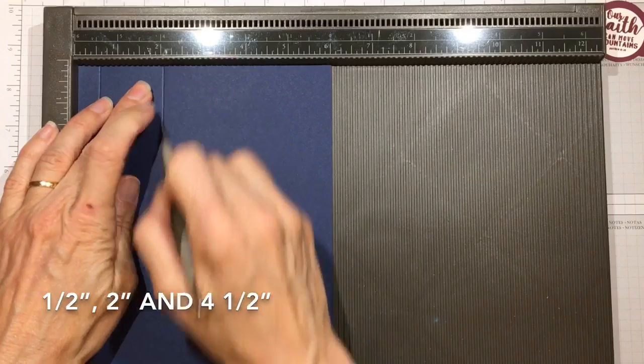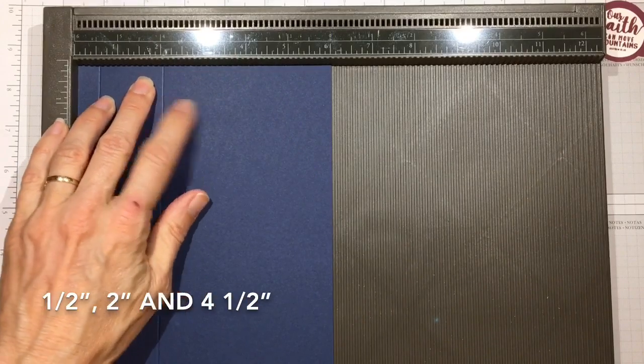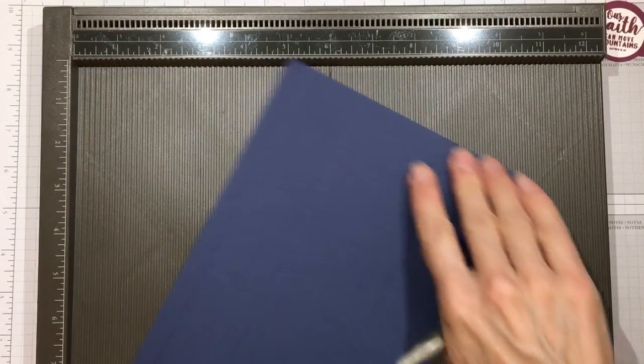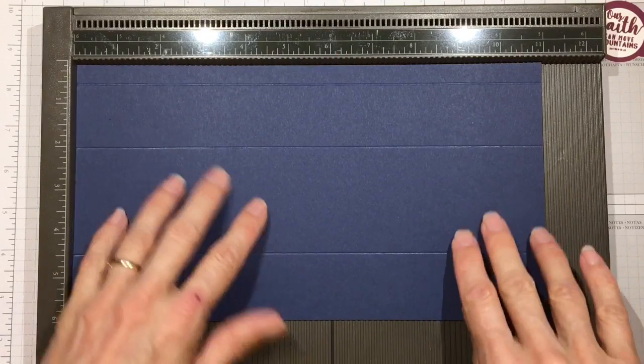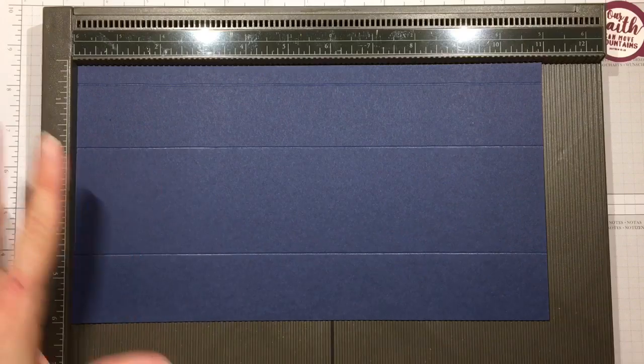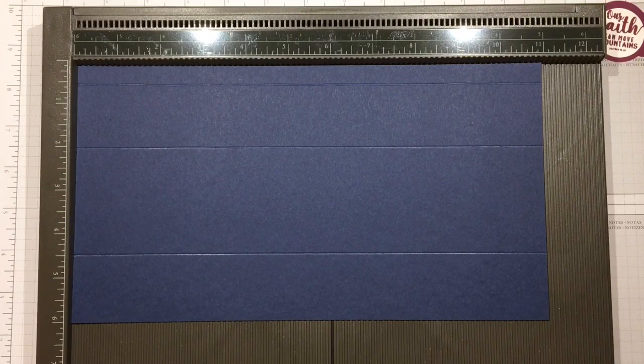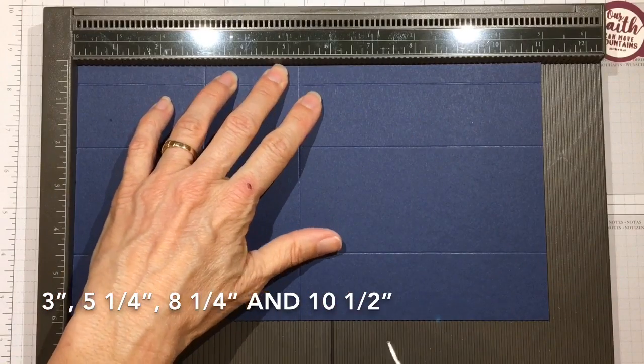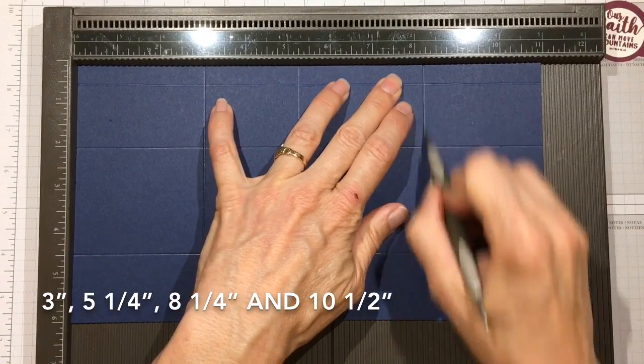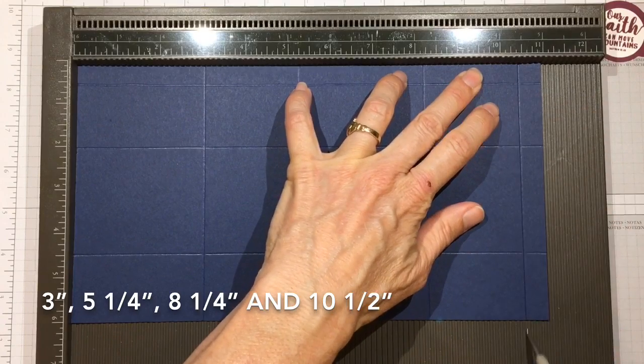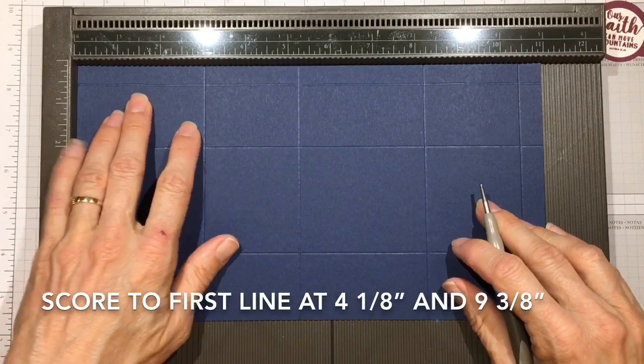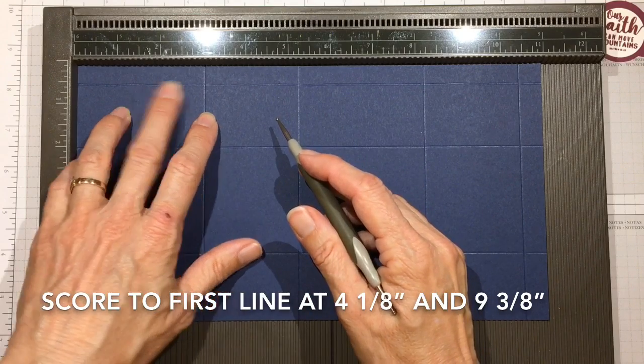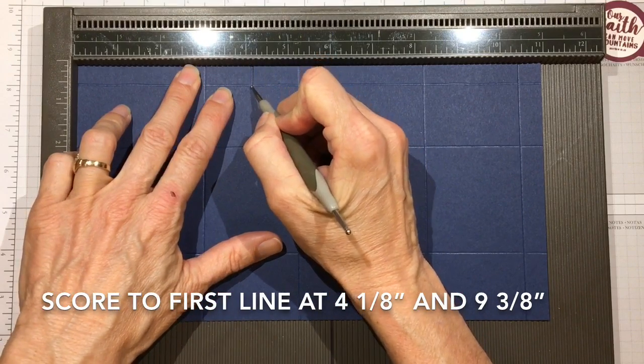At two inches and at four and a half inches. Let's turn it clockwise because we want that half an inch section up top because we're making a milk carton and we need to do some partial scoring along with our full scoring. Let's score it all the way first at three inches, five and a quarter, eight and a quarter, and ten and a half. To form the triangles on top of the milk carton, we're going to do a partial score just down to that first line at four and one eighth, and at nine and three eighths just down to that first line.